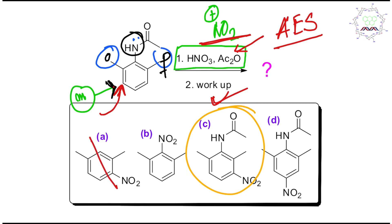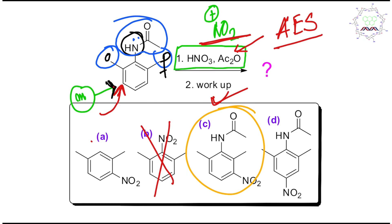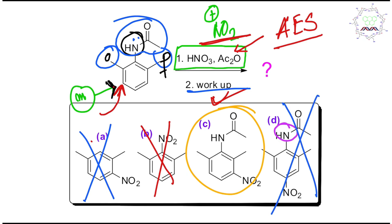Looking at the options: option B is ipso substitution — not possible here. Option A shows nitration but the NHCOCH3 group is gone, which cannot happen under simple workup conditions — not possible. Option D shows para substitution, but because of the ortho dimethyl effect the NH cannot delocalize its lone pair into the benzene nucleus, so a para product is not possible. Only option C remains — this is the correct product.